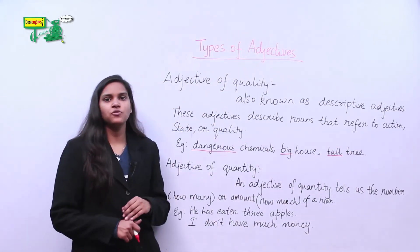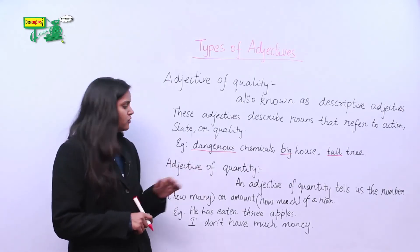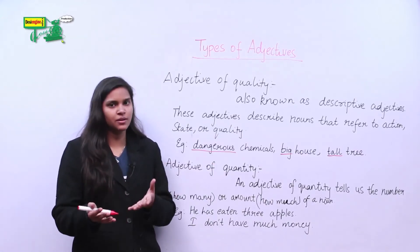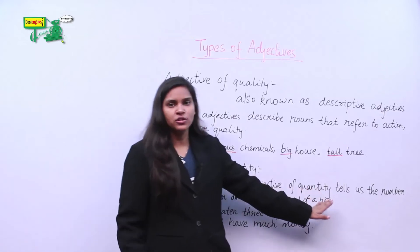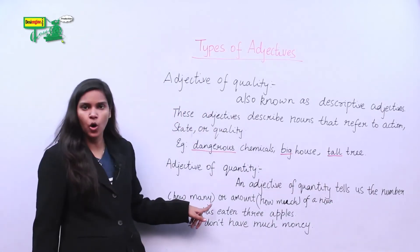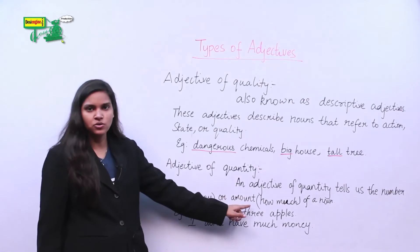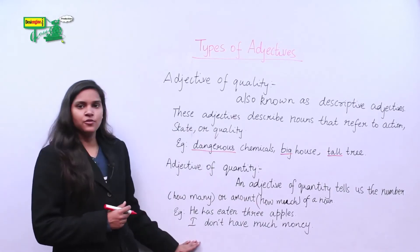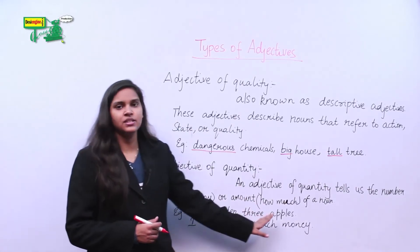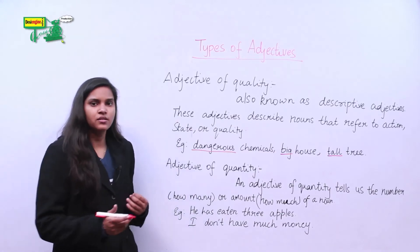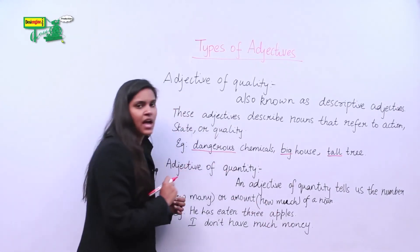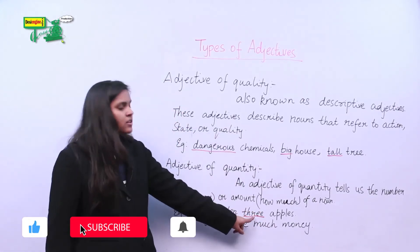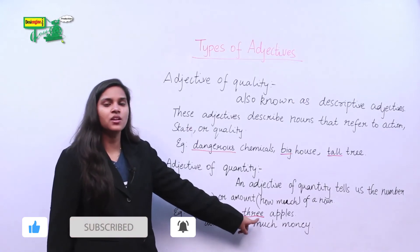Let's do the next kind of adjective, that is the adjective of quantity. As the name suggests, adjective of quantity is about numbers. An adjective of quantity tells us the number — that is, how many — or the amount, how much of a noun there is. Let's take a few examples. He has eaten three apples. Here the noun is apples, and the adjective of quantity is three because it denotes the number of apples.